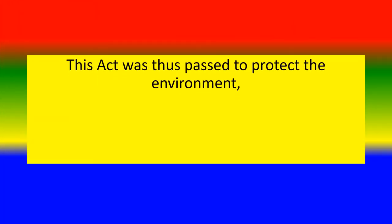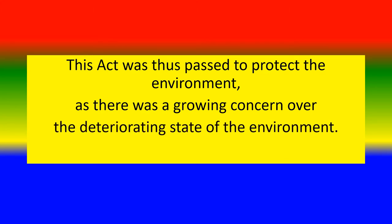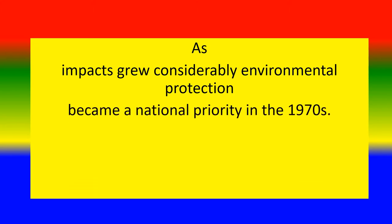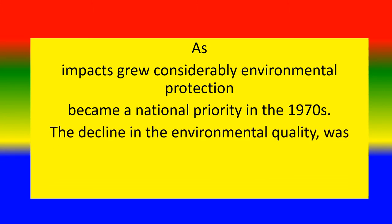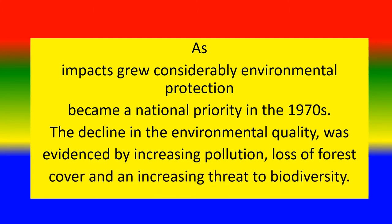The Act was thus passed to protect the environment, as there was a growing concern over the deteriorating state of the environment. As impacts grew considerably, environmental protection became a national priority in the 1970s. The decline in environmental quality was evidenced by increasing pollution, loss of forest cover, and an increasing threat to biodiversity.